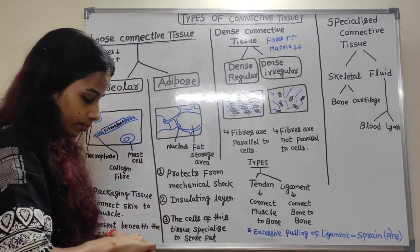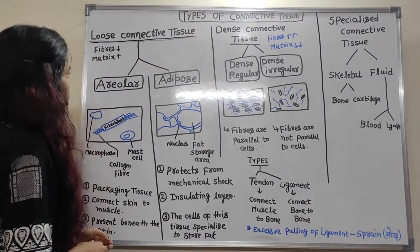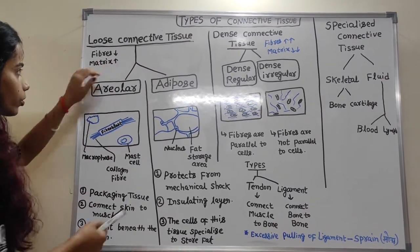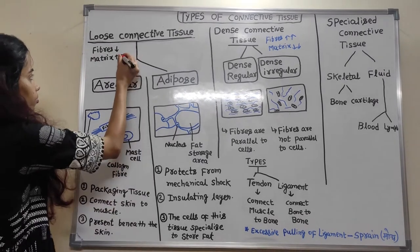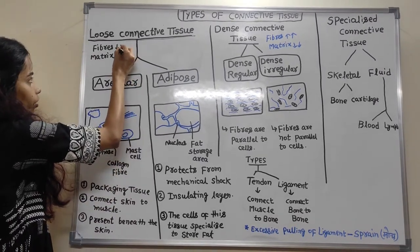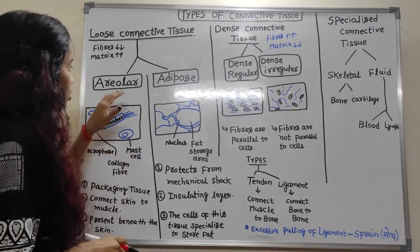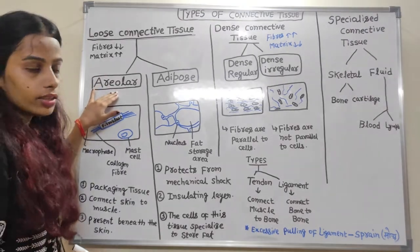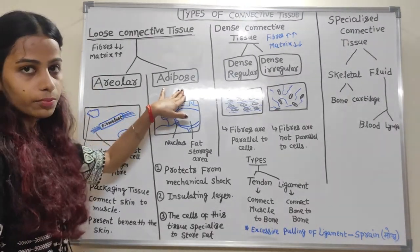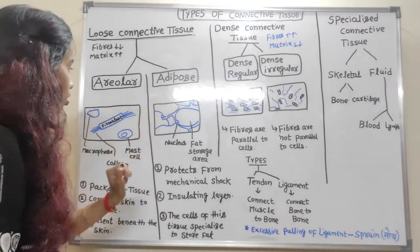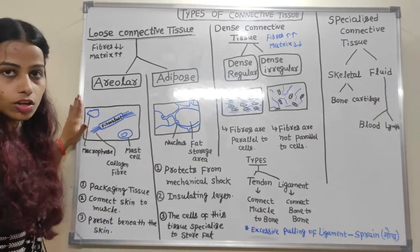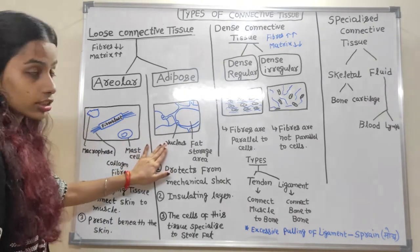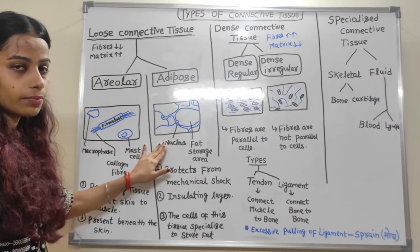What is the meaning of loose? Loose means fibers are less and matrix is more. It is further divided into areolar and adipose connective tissue. This is the structure of areolar loose connective tissue and this is the structure of adipose loose connective tissue.